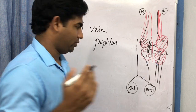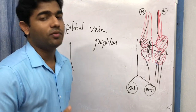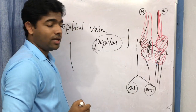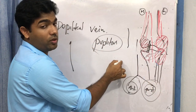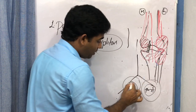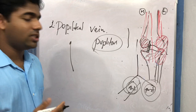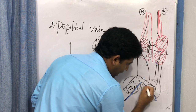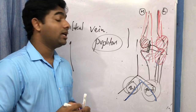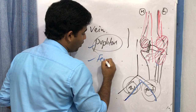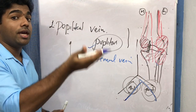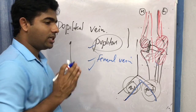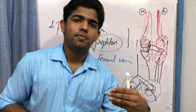The anterior and posterior tibial veins accompany their respective arteries, and from those veins the popliteal vein begins. It continues upward as the femoral vein — just as the femoral artery continued as the popliteal artery going down, here the popliteal vein continues as the femoral vein going up.